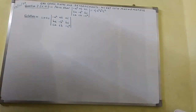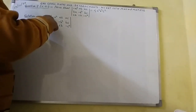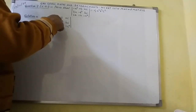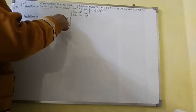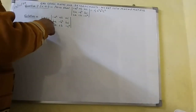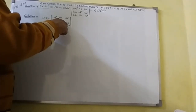Here you can see in this determinant, in the first row, A is a factor in each element. In the second row, B is a factor in each element. In the third row, C is a factor in each element.